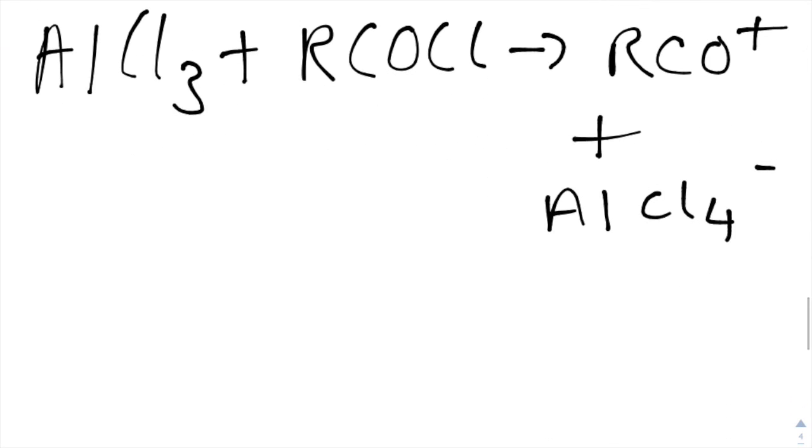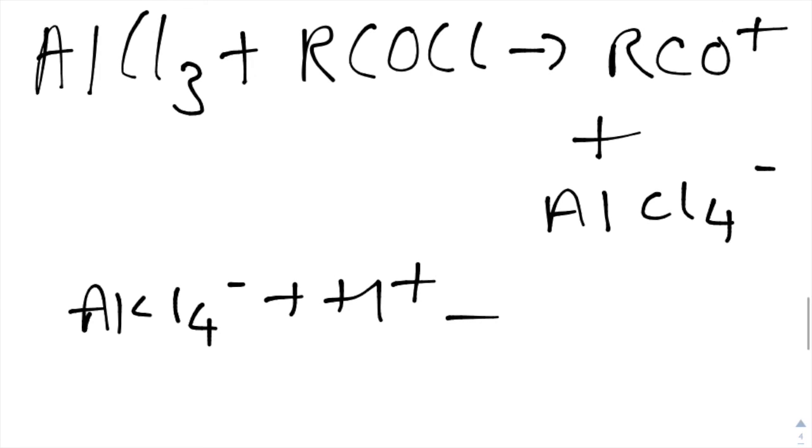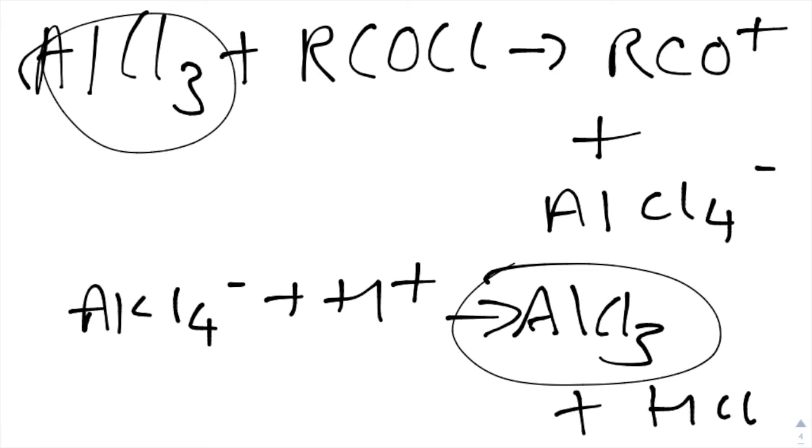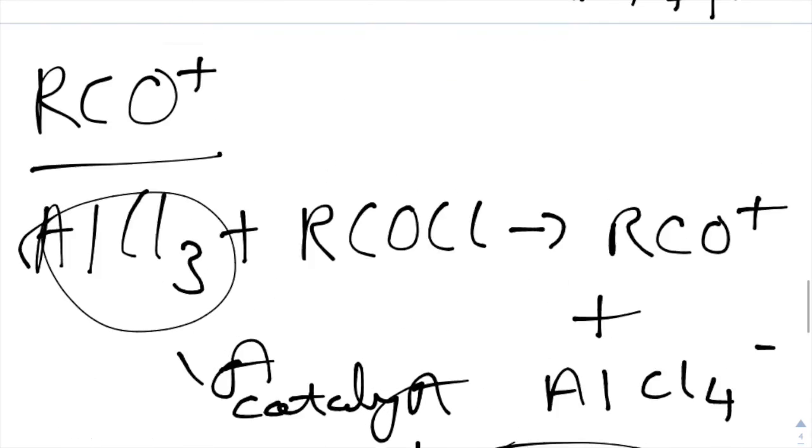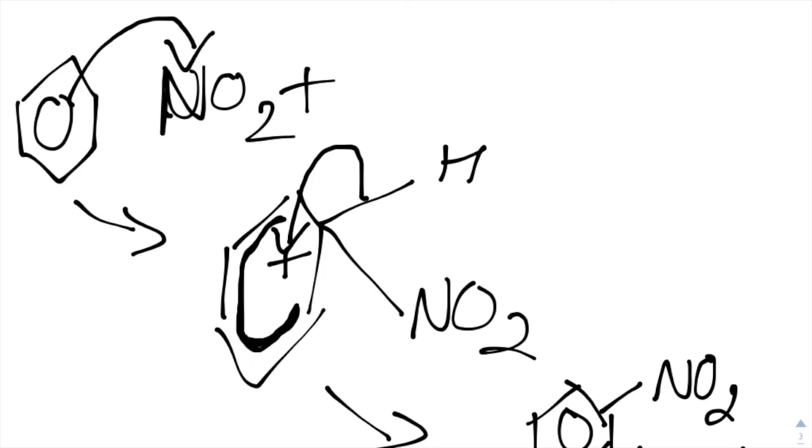Just a note, you can do AlCl4 minus plus H+ to go to AlCl3 plus HCl. And then you'll realize that this is therefore a catalyst, and the mechanism follows the exact same stages as the one up here. This is basically what you need to know.